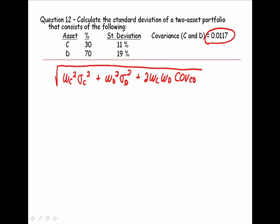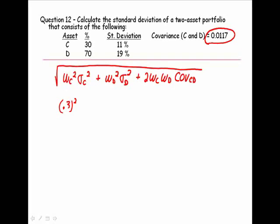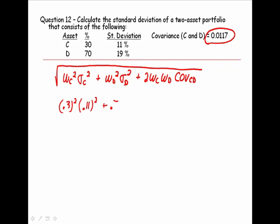So I'm going to go ahead and use these decimals. Thirty percent of my money is invested in asset C, which has a standard deviation of 0.11. Seventy percent of my money is invested in asset D, that has a standard deviation of 0.19, plus two times 0.3 times 0.7 times my covariance, which was given 0.0117.